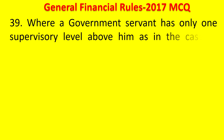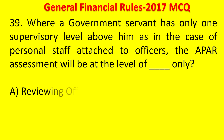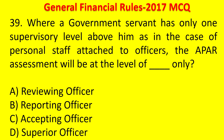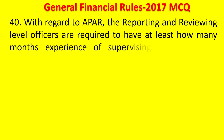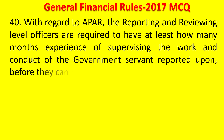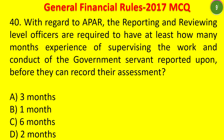MCQ: Where a government servant has only one supervisory level above him (as in personal staff attached to officers), the APAR assessment will be at the level of which officer only — reviewing officer, reporting officer, accepting officer, or superior officer? Answer: Reporting officer only. MCQ: The reporting and reviewing level officers are required to have at least how many months' experience of supervising the work and conduct of the government servant before they can record their assessment — 3 months, 1 month, 6 months, or 2 months? Answer: 3 months minimum.